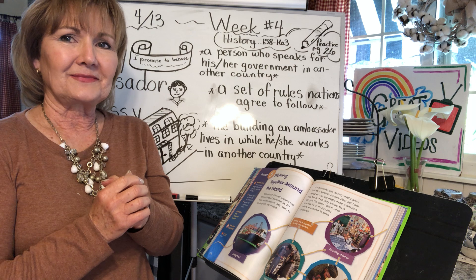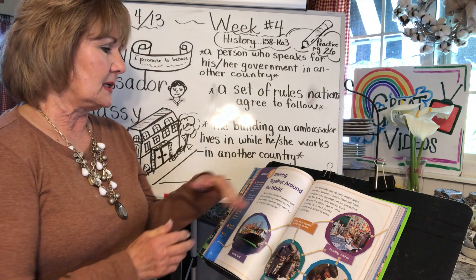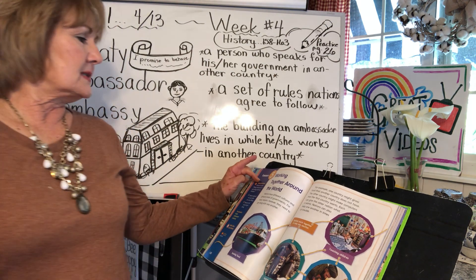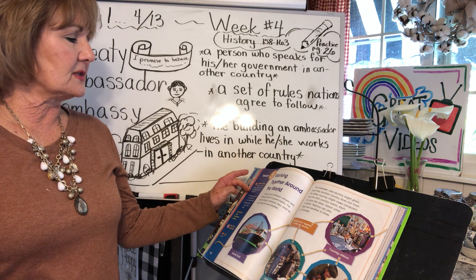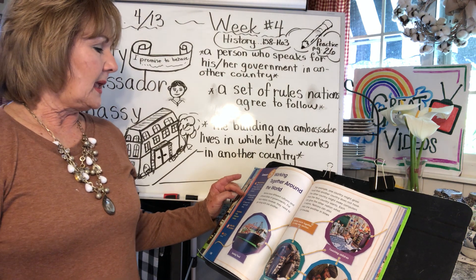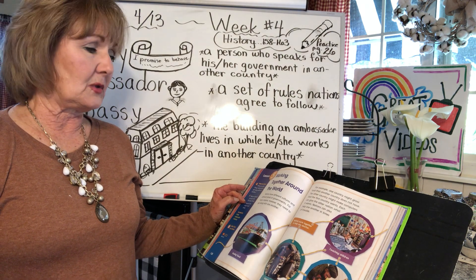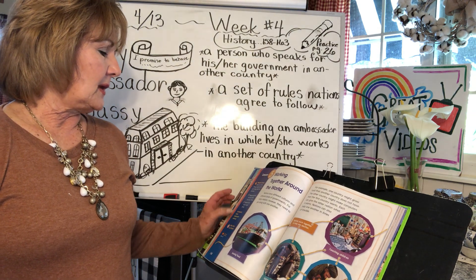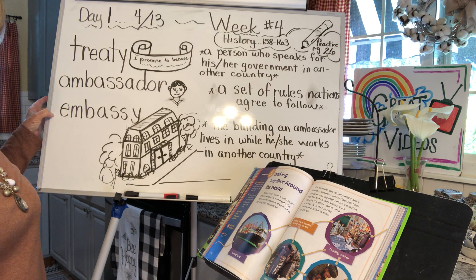Alrighty, so the title of this chapter is 'Working Together Around the World,' lesson five. Some of the things we are going to find out: what are some things nations do to get along with one another? We know that can always be a problem. The first check is nations depend on each other for many things, and nations find ways to get along.